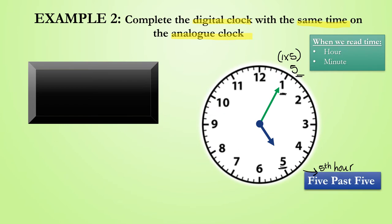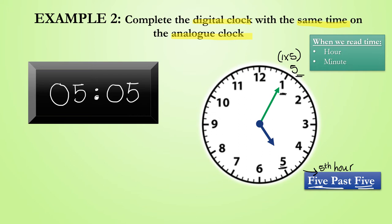It is therefore 5 minutes past 5. Now let's show this on the digital clock. The hour section will include a 5 since we are in the 5th hour, and the minute section will also include a 5 since 5 minutes have passed the hour. Let's add that in. We have updated the digital clock with the same time displayed on the analog clock as required.